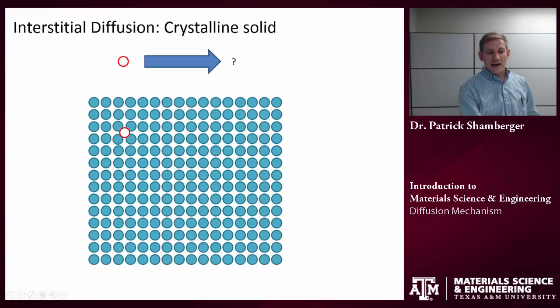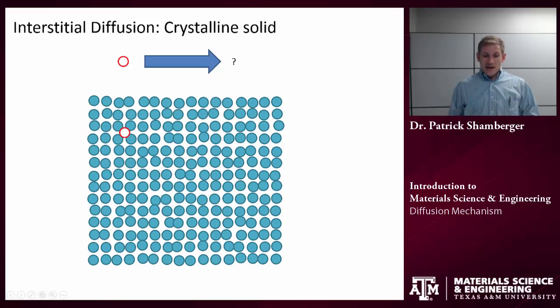So let's talk about the two principal mechanisms of diffusion. The first is going to be interstitial diffusion. And in this case, the atom that I'm thinking about is sitting in an interstitial site. So again, at any temperature, all those neighboring atoms are vibrating a little bit.